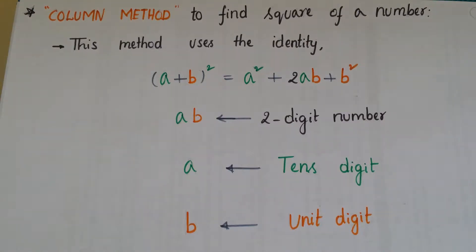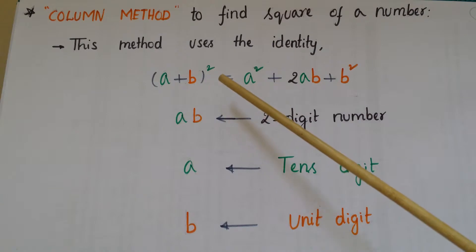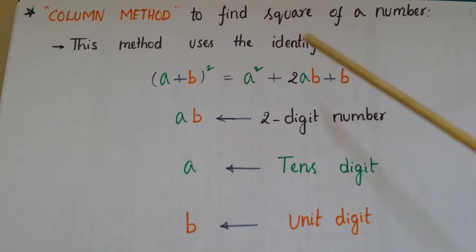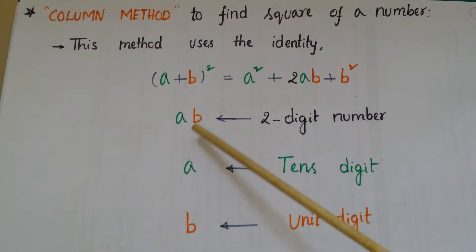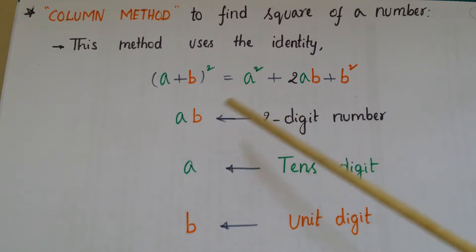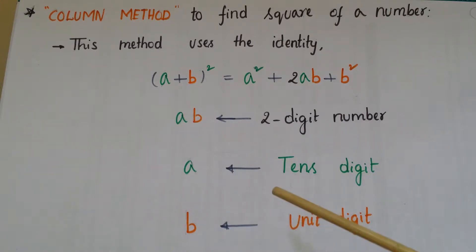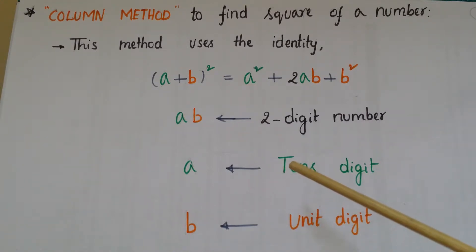Hello everyone, today I am going to tell another method to find the square of a number — that is the column method. In this method we use the identity: (a + b)² = a² + 2ab + b², where ab is a two-digit number, a is the tens digit and b is the units digit. Let us go through some examples and then you will easily understand this method.